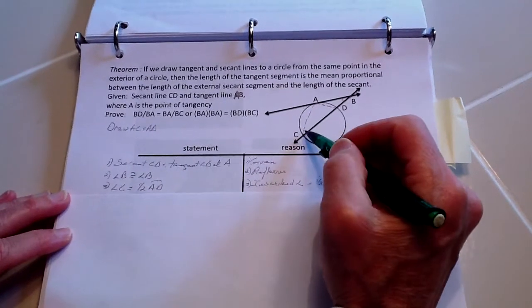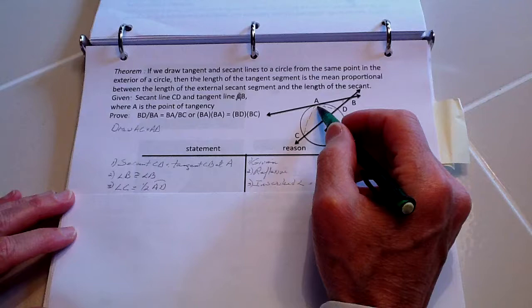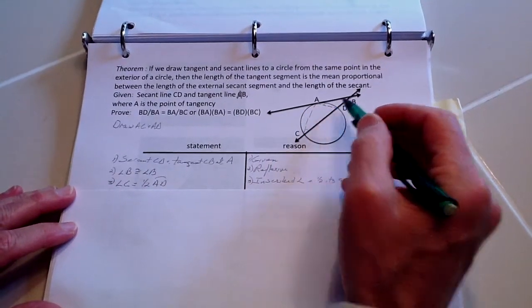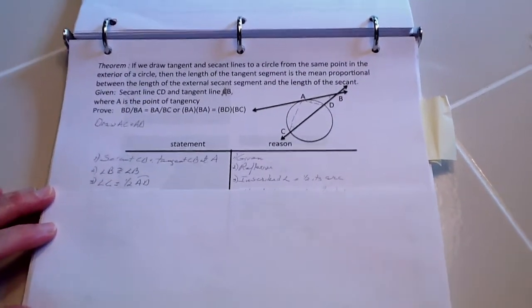Angle C, this angle right here, is going to equal one half of this arc AD because that's the inscribed angle theorem where the inscribed angle equals one half its arc.